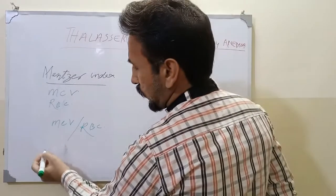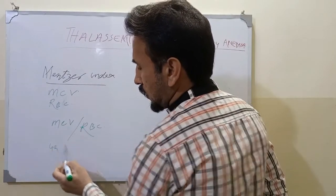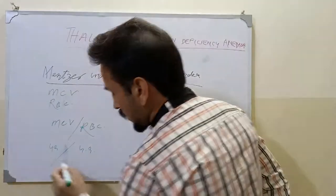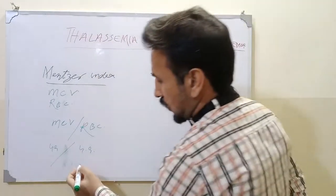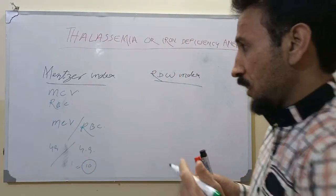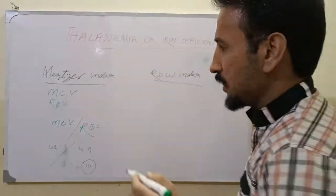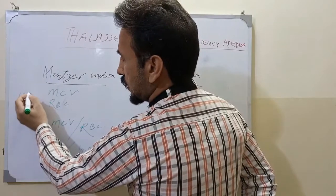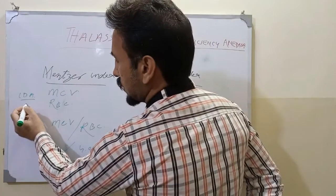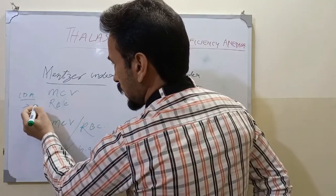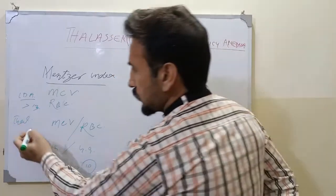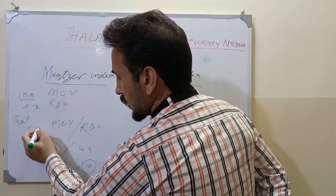For example, if a patient has an MCV of 49 and an RBC count of 4.9, the Mentzer Index comes out to be 10. In iron deficiency anemia, the Mentzer Index is almost always more than 13.